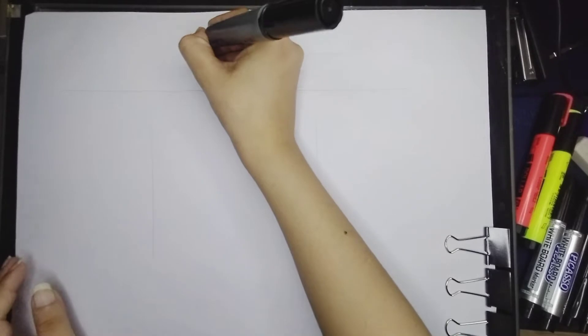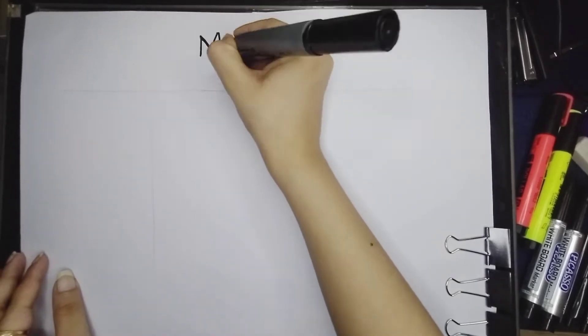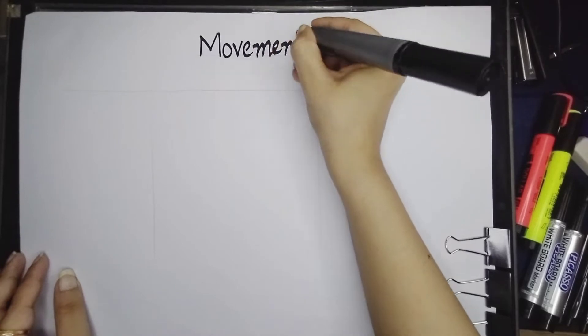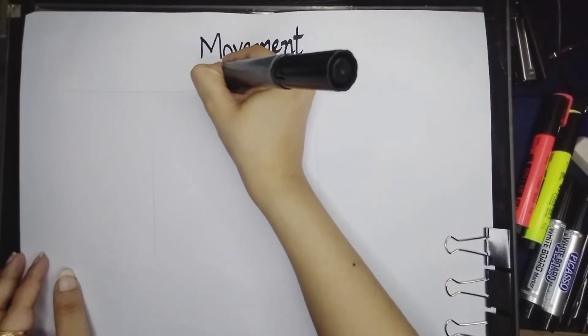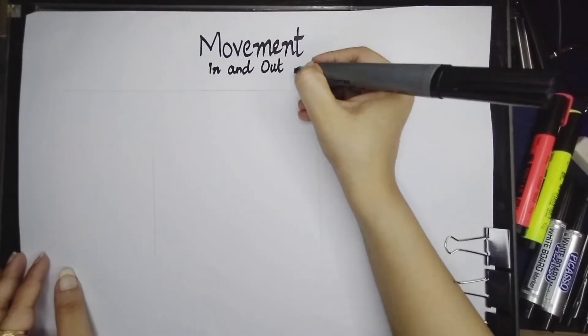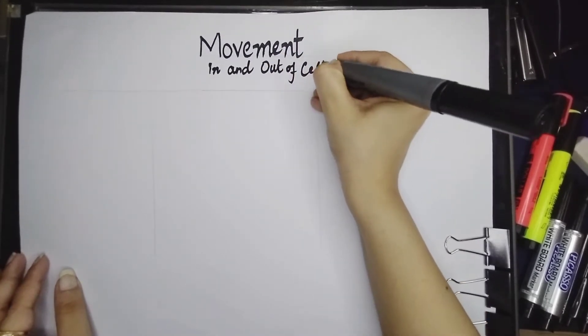Hello everyone. In this video, we are going to find out how different things move in and out of the cell. Basically, we are going to talk about movement of molecules inside and outside the cell. So let's start.